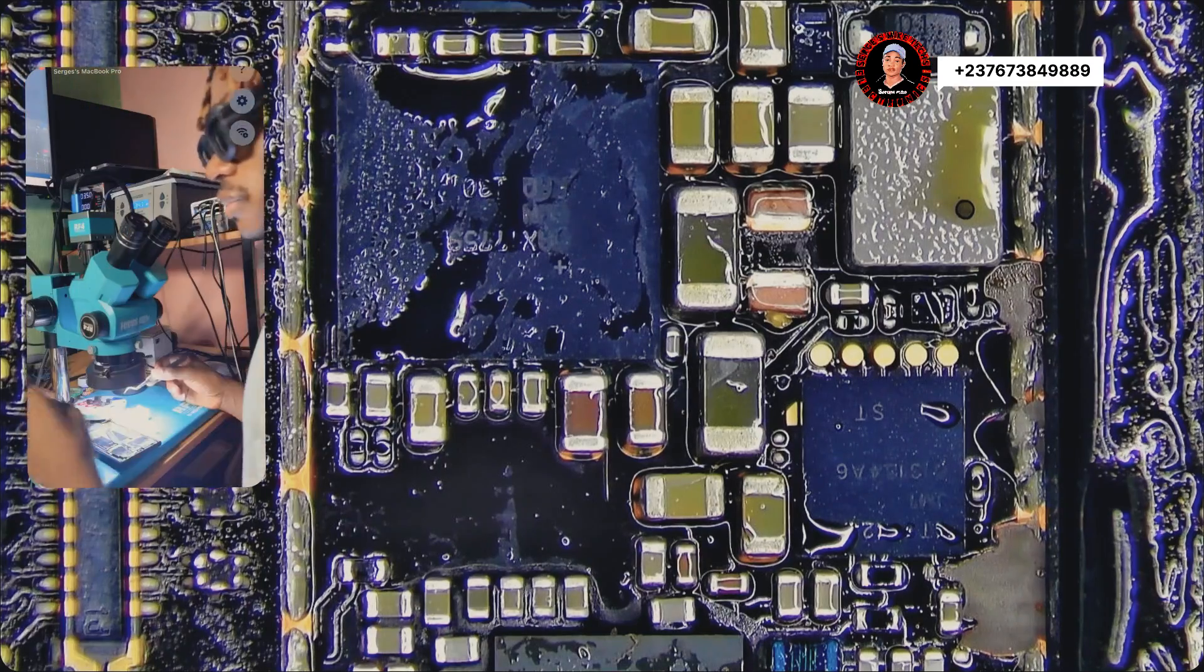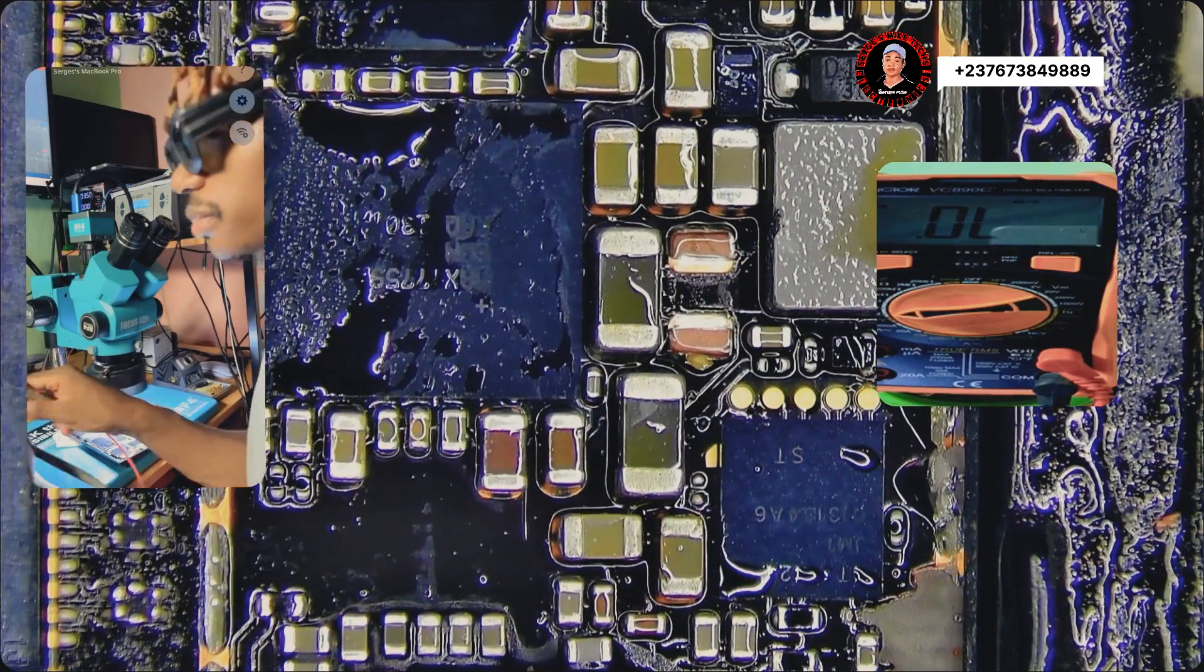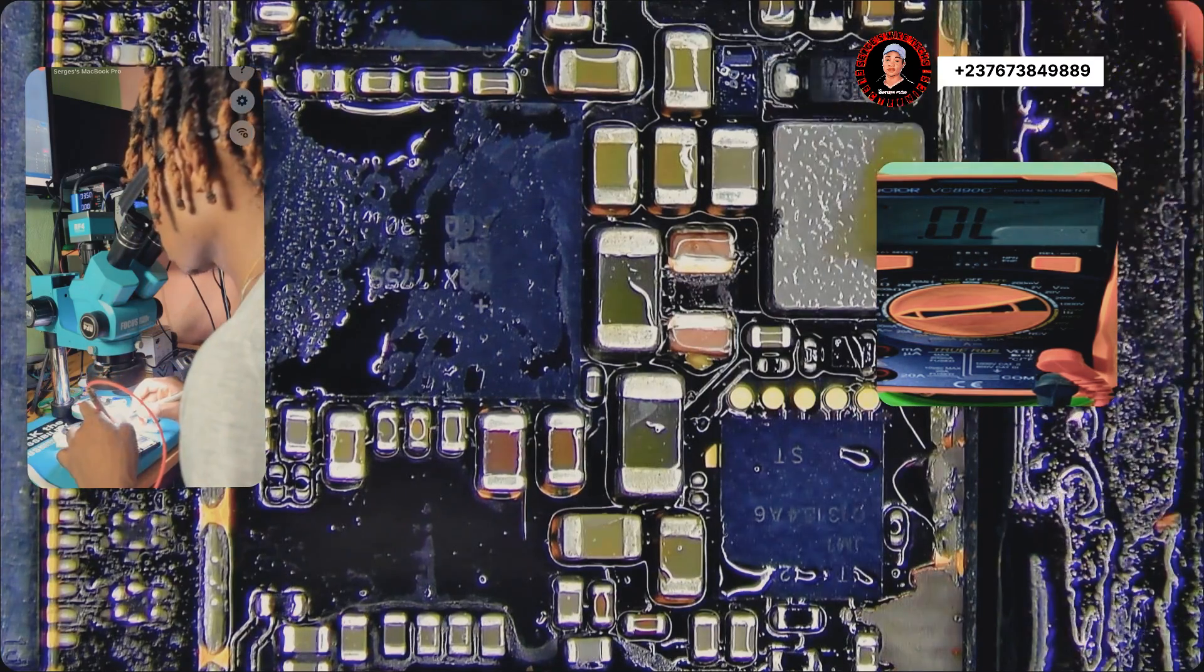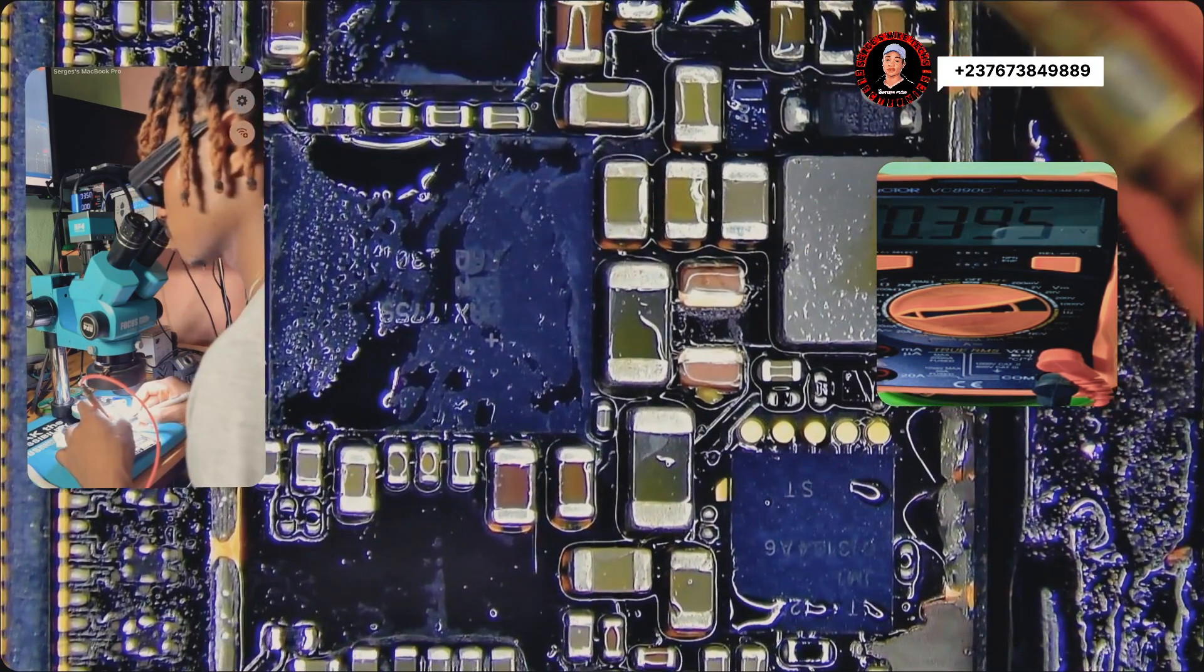If you want my courses, that's my number right there on the screen. Just copy it, send me a message, and I will send information about my course. Now I send my multimeter again to continuity test mode to test the VPH line.